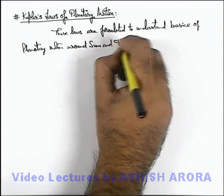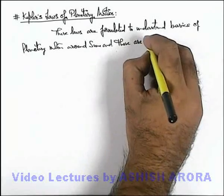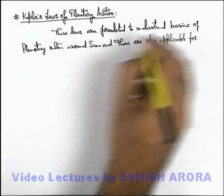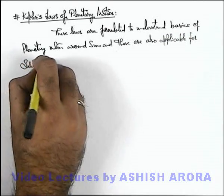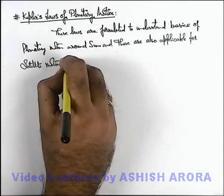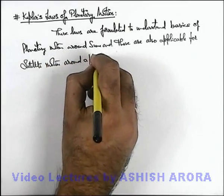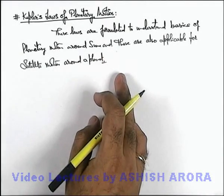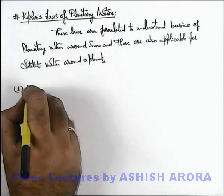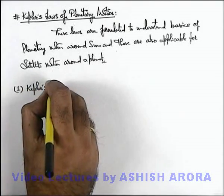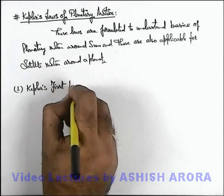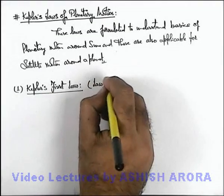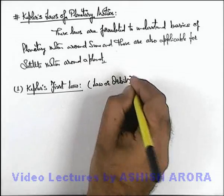These are also applicable for satellite motion around a planet. We'll discuss these laws one by one. In general there are 3 Kepler's laws, so we'll start with Kepler's first law. This Kepler's first law is also known as the law of orbits, because it is related with the shape of orbits.